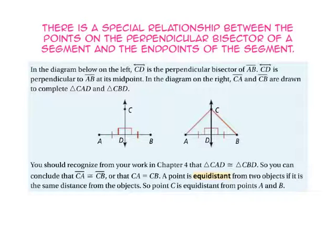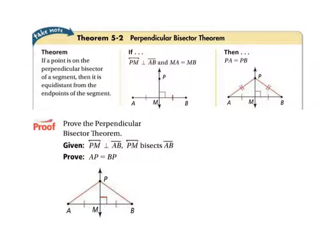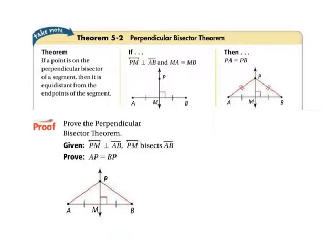A point is equidistant from two objects if it is the same distance from both objects. So point C is equidistant from points A and B. The perpendicular bisector theorem states: if a point is on the perpendicular bisector of a segment, then it is equidistant from the endpoints of the segment. So if line PM is perpendicular to segment AB and the length of segment MA equals the length of segment MB, then the length of segment PA equals the length of segment PB.